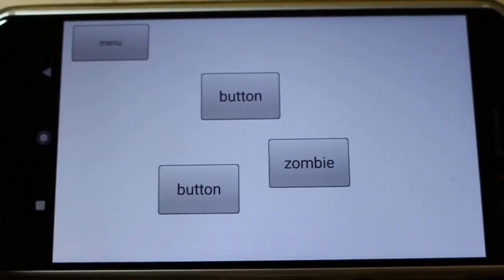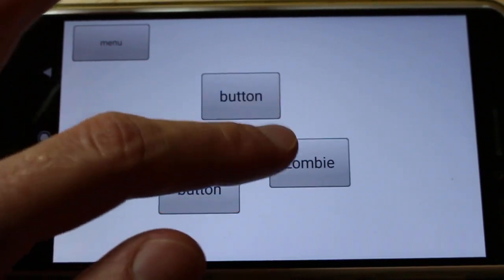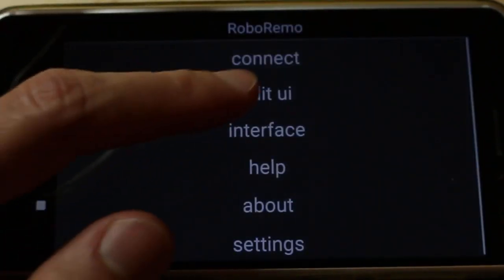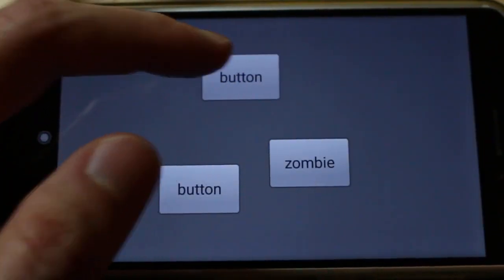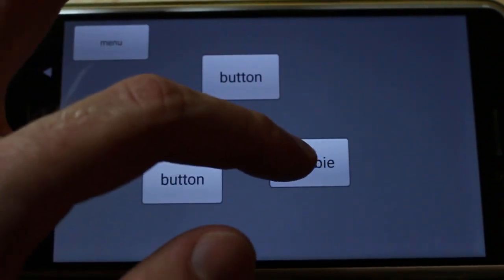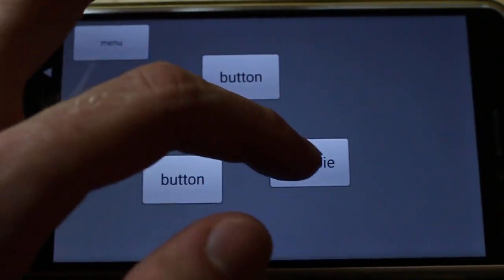So I have these three buttons. I can click on them. But when I edit, I can move this button, I can move this button, but this one does not move.